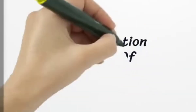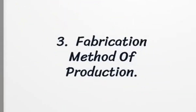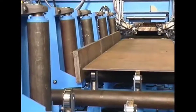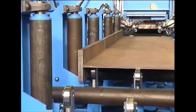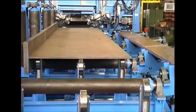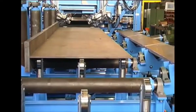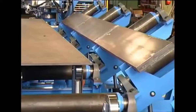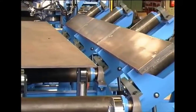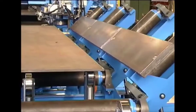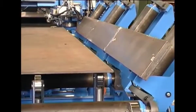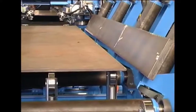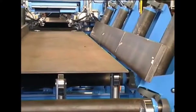The third production method is the fabrication method. Here you assemble different steel sections together and finish them. You can weld them to make a connection between them. For example, if you want to make an I section, you just need to get three rectangular sections, assemble them, and weld them together. That's the fabrication method.